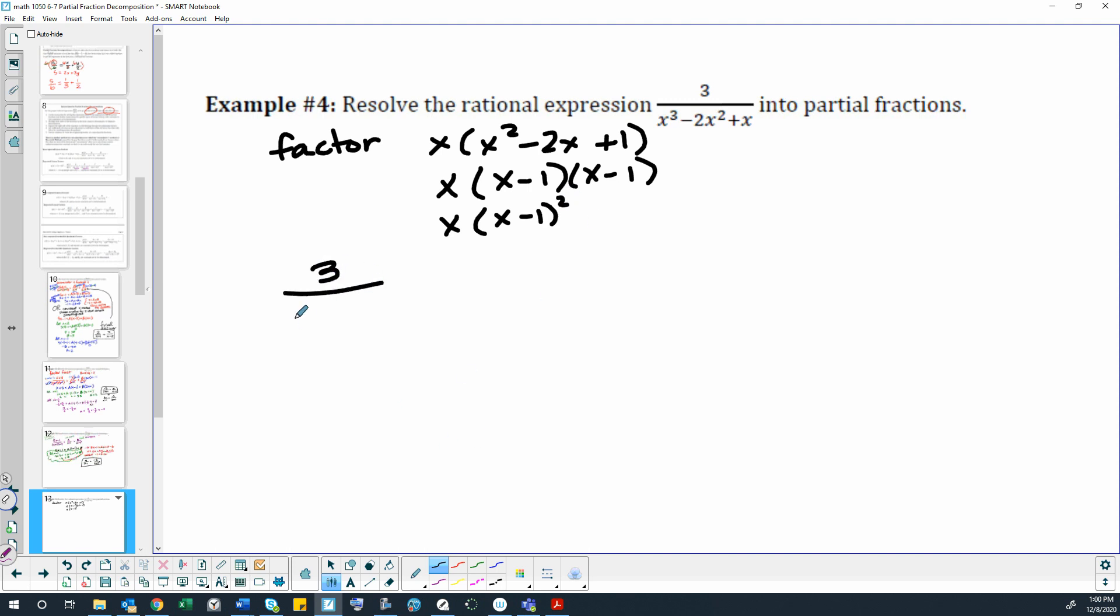So to write this one down, we are going to write it as A over x plus B over x minus 1 plus C over x minus 1 squared.